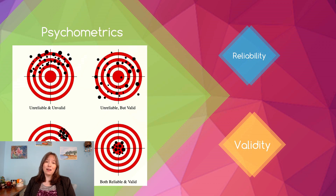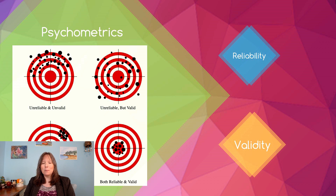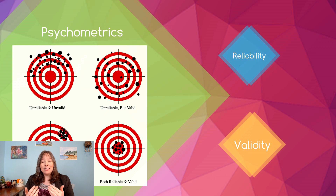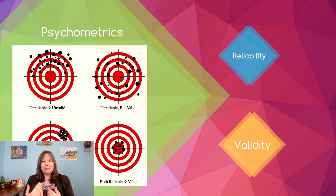The problem with some IQ tests is that some questions on them may not be the best types of questions. When designing an IQ test, we have to be very careful to pay attention to reliability and validity, which work together to make sure we hit our target. Reliability is the idea that if you're testing something that shouldn't change dramatically over a short period of time, the score should be similar time after time. Validity is the idea that when you think you're measuring something, you're actually measuring what you intend to measure.